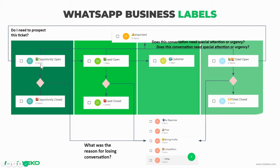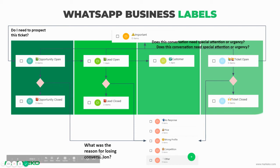The first thing is I open a conversation — I start that as an opportunity open. If the user does not respond or for whatever reason, I send them to lost. I have to do two things: change opportunity open to opportunity close, and also select the reason for losing that customer — whether it was no response, price, room profile, competition, or any other reasons.